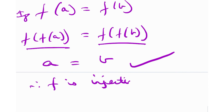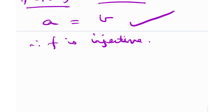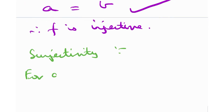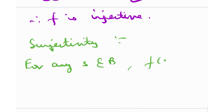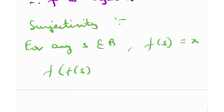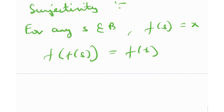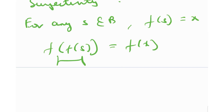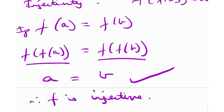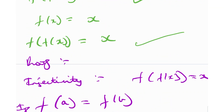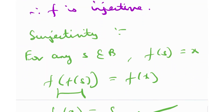We've proven an involution is injective. Now we test surjectivity. For any s belonging to real numbers, let f(s) = x. We calculate f(f(s)) = f(x). By the definition of involution, f(f(s)) = s. Therefore f(x) = s. So our function is surjective as well. It is surjective, it is injective, and hence our involution function is indeed bijective. So all involutions are bijective.